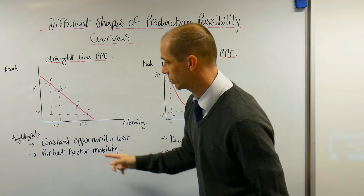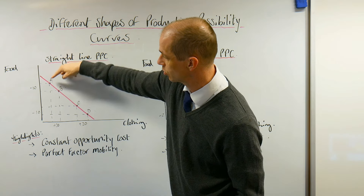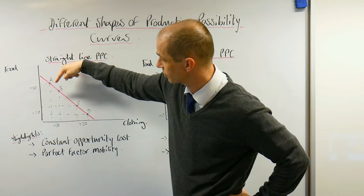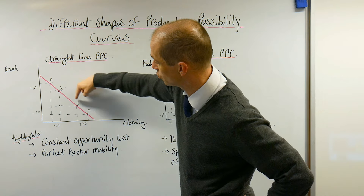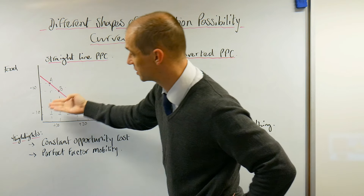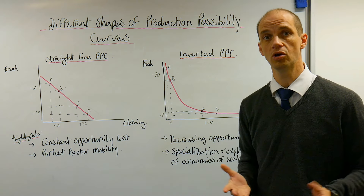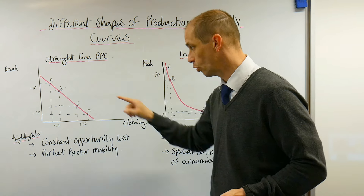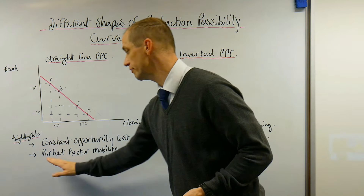The straight line PPC highlights a constant opportunity cost. We can see food and clothing on our axes, and as we move from point A to point B we give up 10 units of food but gain 20 units of clothing. Meanwhile, moving from point C down to point D, we again give up 10 units of food and gain 20 units of clothing. This shows that whether you move from A to B or C to D, the opportunity cost remains the same throughout.